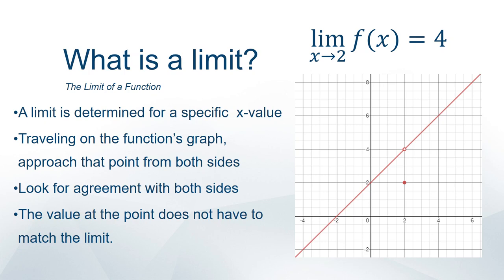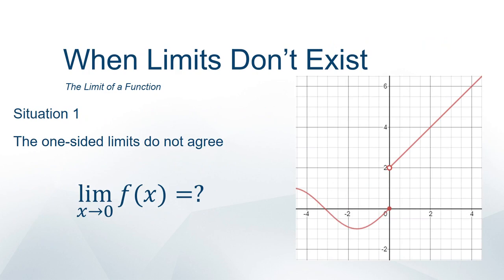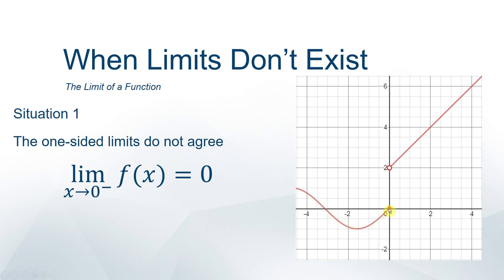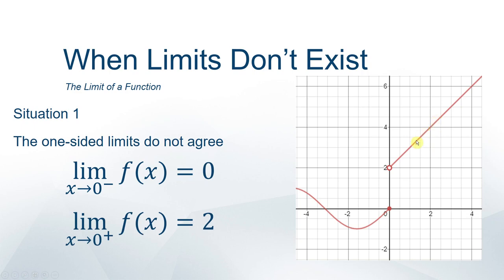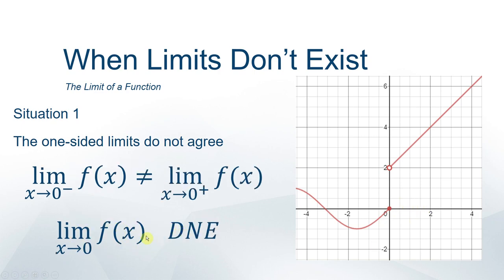Now, what about things that throw the limit off — when the limit does not exist? The first situation: the left and right one-sided limits must agree. Looking at a piecewise function with two pieces, approaching from the left along the sinusoidal curve you head towards 0, so the left one-sided limit is 0. But heading from the right you head towards 2. Since those left and right-hand limits don't agree, the overall limit does not exist.